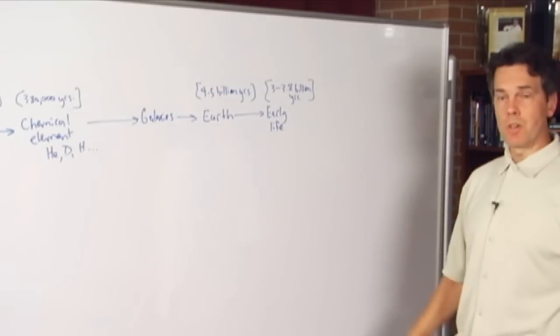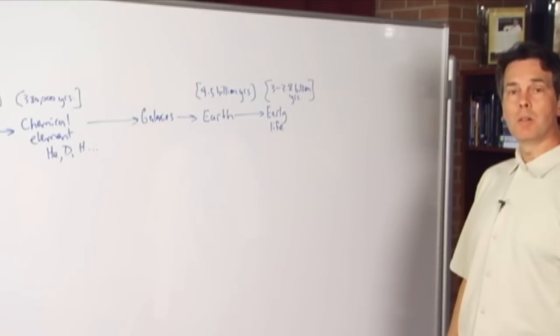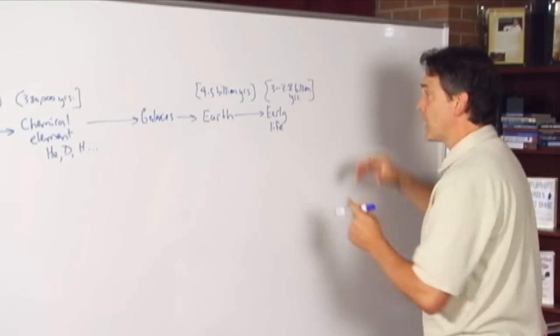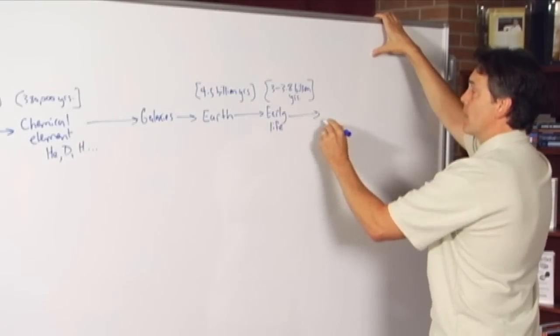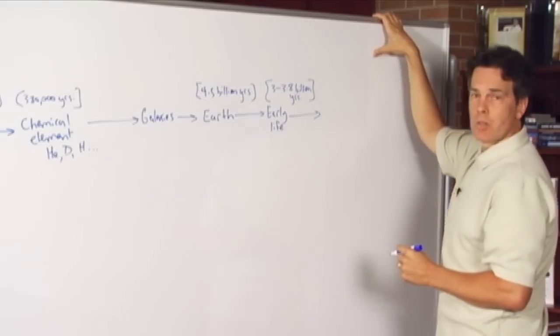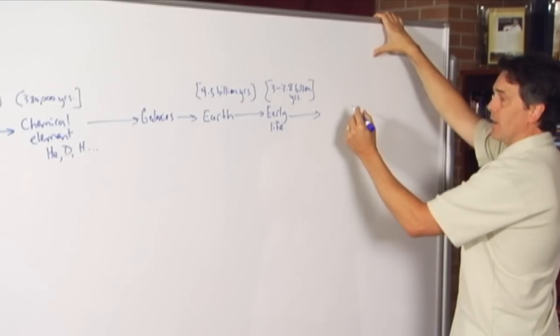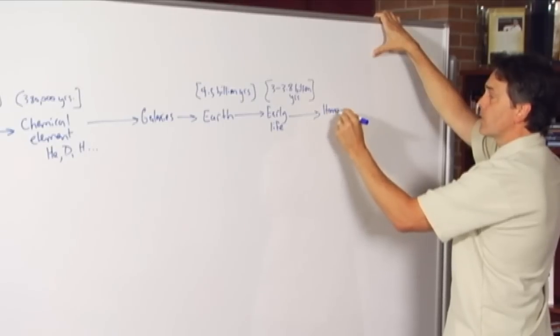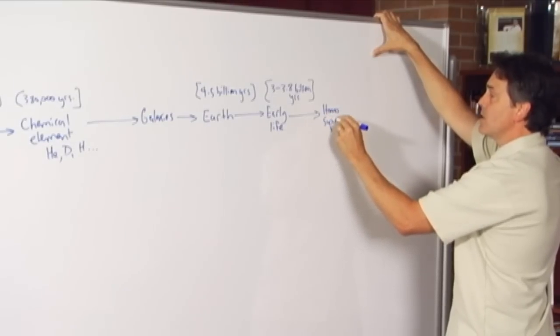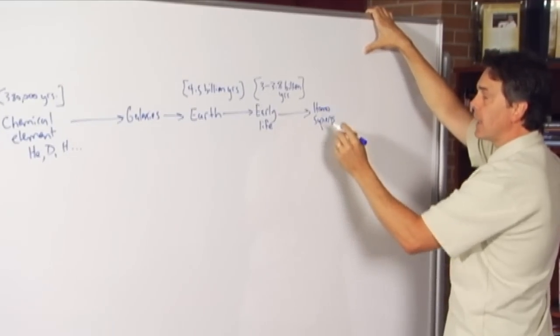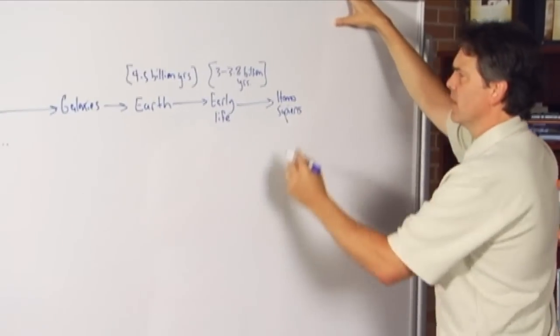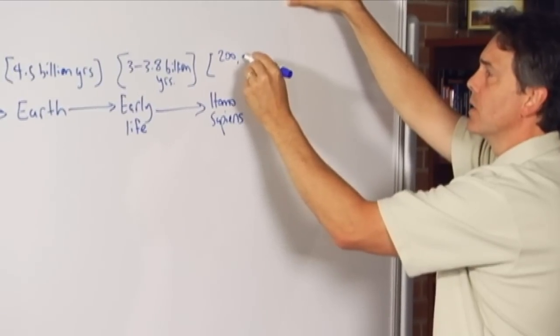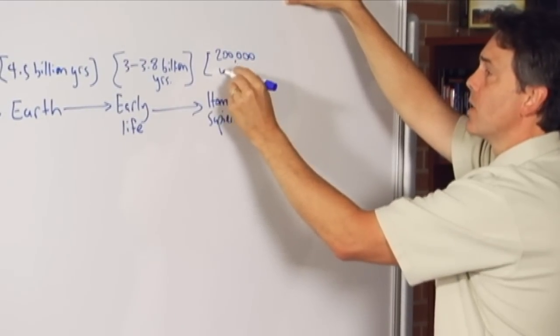Again, those numbers are subject to change as more information comes in. Life forms evolve in complexity, and again, from our perspective, the next major significant event to occur is the development of us. The Homo sapiens version of complicated life, and the numbers start to get fairly small, historically speaking. This is approximately 200,000 years ago.